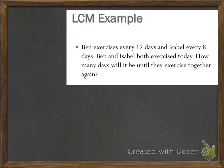Now we're going to look at an example. You do not need to write this problem down — we're just going to talk through it. The least common multiple example is: Ben exercises every 12 days and Isabel every 8 days. Ben and Isabel both exercised today. How many days will it be until they exercise together again?